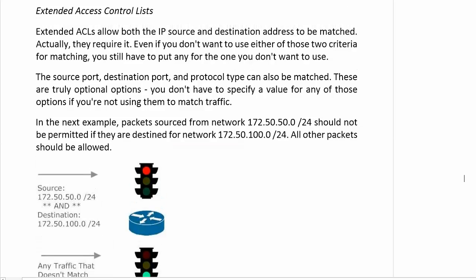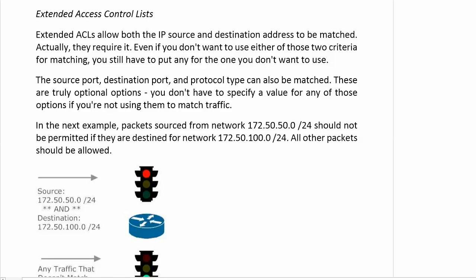We're going to go from a standard ACL type that gives us not enough options to an extended access control list that gives us way too many options at times. These options are certainly not something you have to know all of for the CCENT and CCNA — knowing a couple would be very helpful. There are so many options with extended ACLs you can get so granular that you could go years, probably decades, and not use all the options in a typical production network admin job.